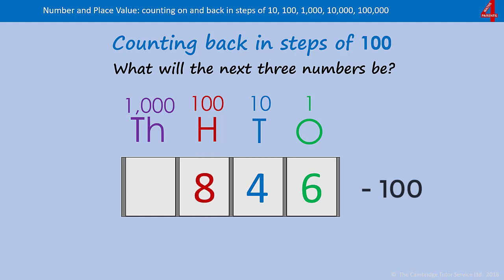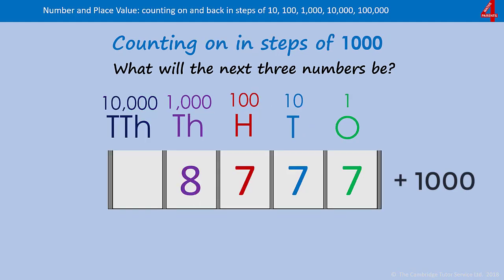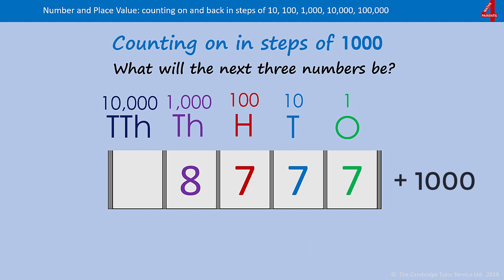Counting on and back in thousands works exactly the same, just one column along. The hundreds, tens, and ones will remain the same if we're just counting on and back in thousands or more. What will the next three numbers be if we count in thousands from eight thousand, seven hundred and seventy-seven? Pause the video and have a go.